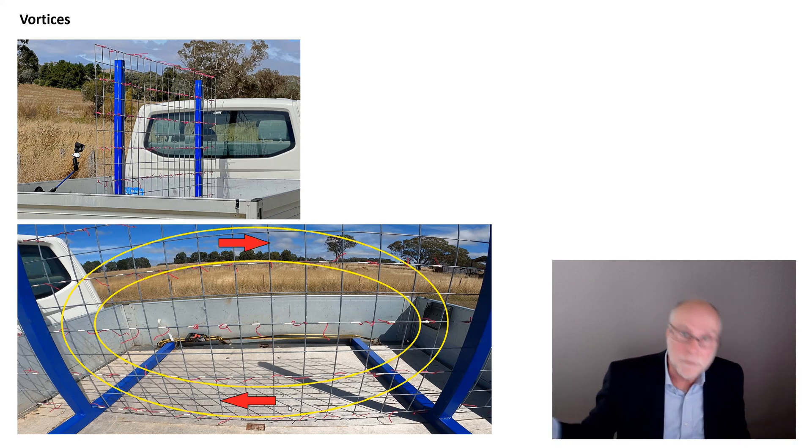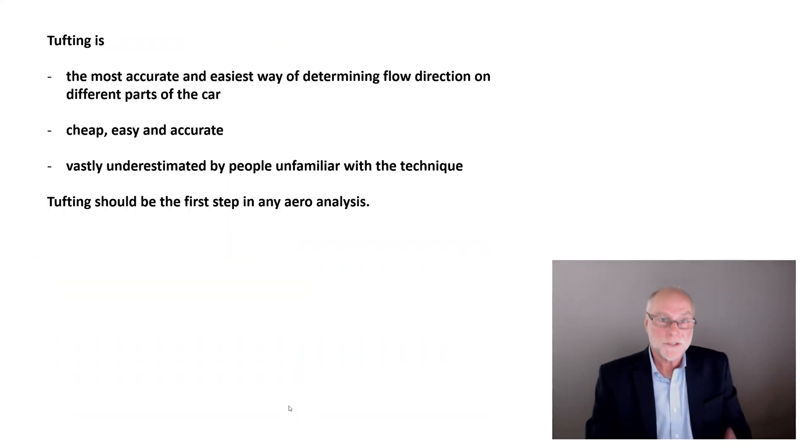Coming back to the topic of the video, the direction the tufts point show where the air is going, unless they are in complete separated flow, in which case their movement is random. So tufting, we saw in another video showing separated and attached flow. In this video, it shows where air directions are, where the airflow is going. It is the most accurate and easiest way of determining flow direction on different parts of the car. We now know how important that is. It's indicative of vortices being shed from A pillars, from C pillars being formed behind pickup trucks and so on. Tufting is cheap, basically zero cost. It's easy, and it is accurate.